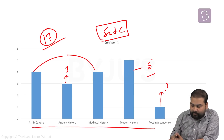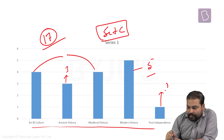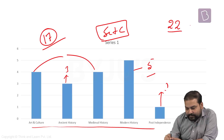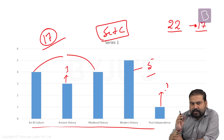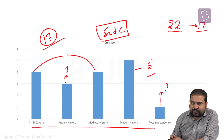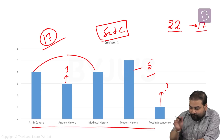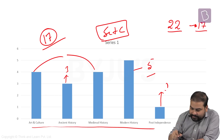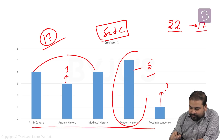Three things come to my mind when I look at these numbers. Number one, last year there were around 22 questions that were asked. This year the number has come to 17 — definitely a shift towards lesser number of questions as far as history is concerned. Number two, there has been a devaluation as far as modern history is concerned.